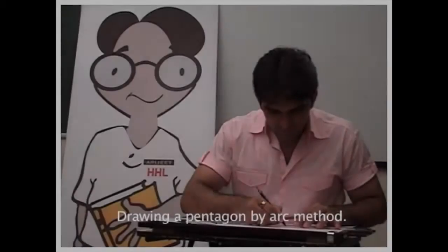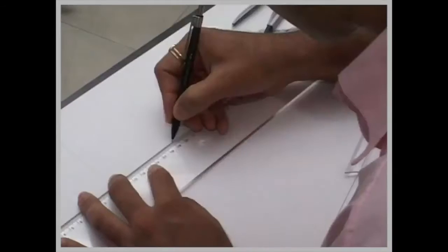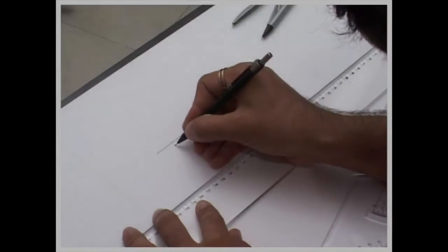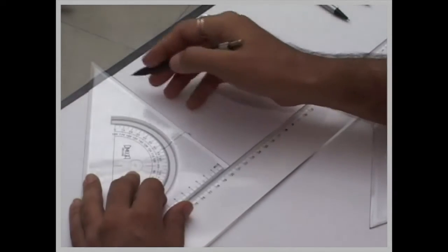We draw a line. This is 4 cm long. We write this point as 1, 2 and 3. This is the middle point. Then from 1, you draw a vertical line.